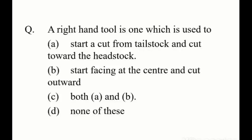A right hand tool is one which is used to: Option A - start a cut from the tailstock and cut towards the headstock. Option B - start a facing at the center and cut outward. Option C - both A and B. Option D - none of these.